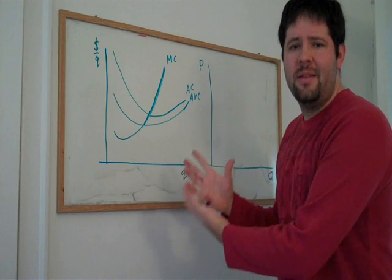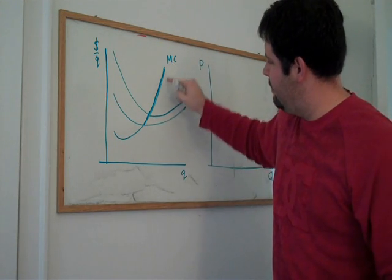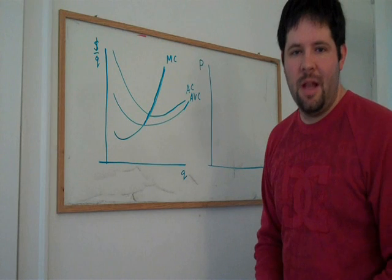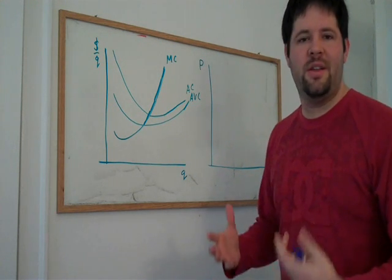We know why the curves are shaped the way they are, and we know that this blue line here is the supply curve for the firm, and we understand why.